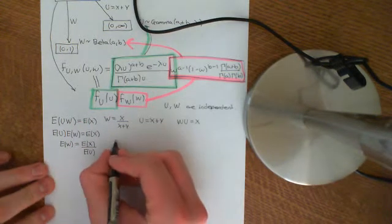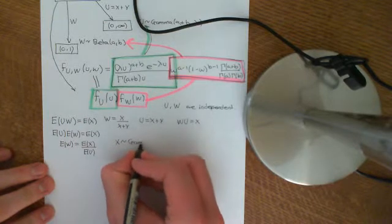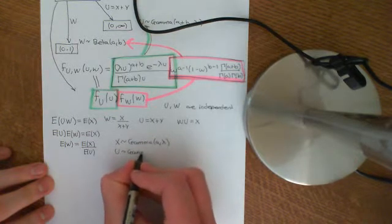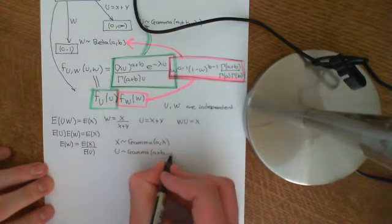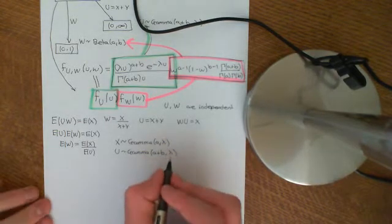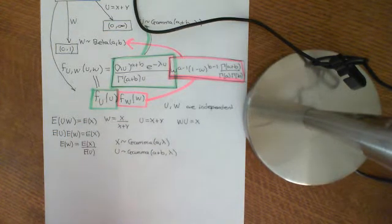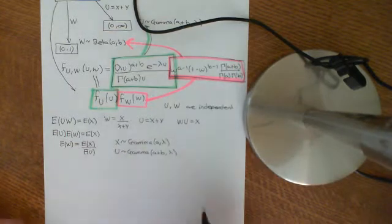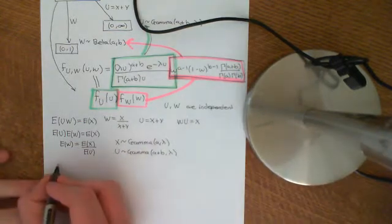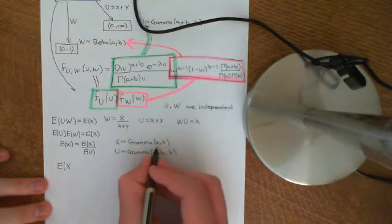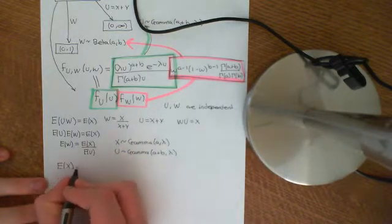Let's do a recap of how we calculated the expected value for a gamma distribution, because X is gamma distributed with parameters A, lambda, and U is also gamma distributed with parameters A plus B, lambda. Before, when we originally calculated the first moment for gamma distributions, we used the moment generating function and differentiated it at T equals zero. In this case, to do it differently, we'll go from the definition. We'll work it out for X, and then substitute in A plus B to get the result for U.